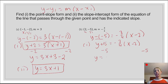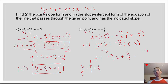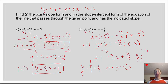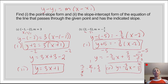For slope-intercept form, we distribute negative 3 fourths and subtract 5 from both sides. Note that negative 3 fourths times negative 2 is positive, and 3 fourths times 2 over 1 simplifies — 2 goes into 4 twice — giving 3 over 2. So we have 3 over 2 minus 5. Converting 5 to 10 over 2 for a common denominator, we get 3 minus 10 over 2, which is negative 7 over 2. Our slope-intercept form is y equals negative 3 fourths x minus 7 over 2. A little scary with fractions, but we got through it.